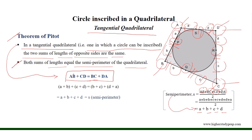Now, according to the theorem, the lengths of opposite sides are the same, and AB plus CD equals BC plus DA, where AB equals A plus B, CD equals C plus D, BC equals B plus C, and DA equals D plus A. So both sums of the lengths equal the semi-perimeter of the quadrilateral.